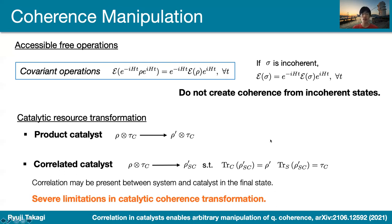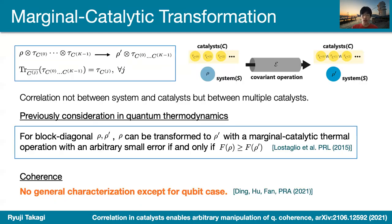It is natural to think about another catalytic transformation that might surpass these limitations. One interesting setting is marginal catalytic transformations. Here, instead of having correlation between the system and catalyst, we have correlation inside the catalytic systems themselves. At the end, we might have correlation among the catalysts, but if you look at each marginal catalytic system state, it goes back to the original marginal catalytic state.